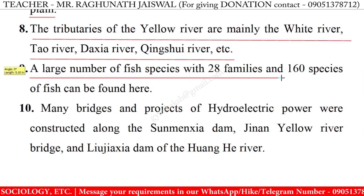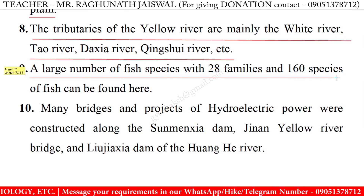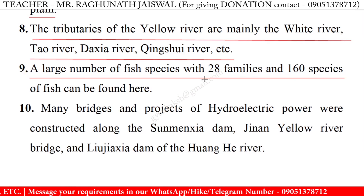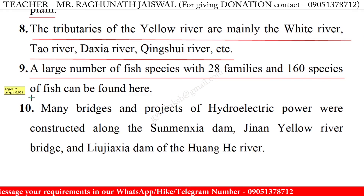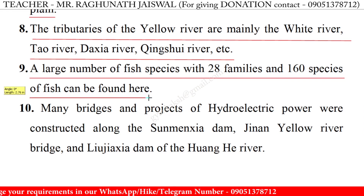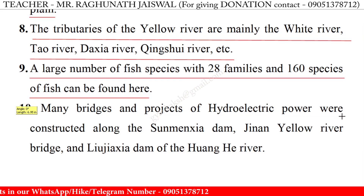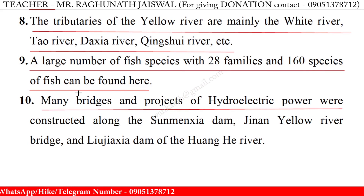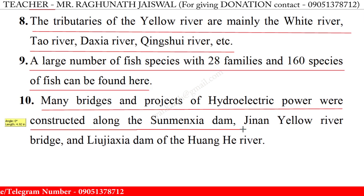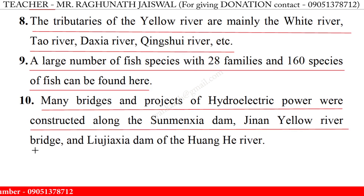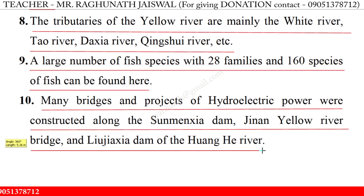19. A large number of fish species with 28 families and 160 species of fish can be found here. 20. Many bridges and projects of hydroelectric power were constructed along the Sanmenxia Dam, Jinan Yellow River Bridge, and Liujiaxia Dam of the Huanghe River.